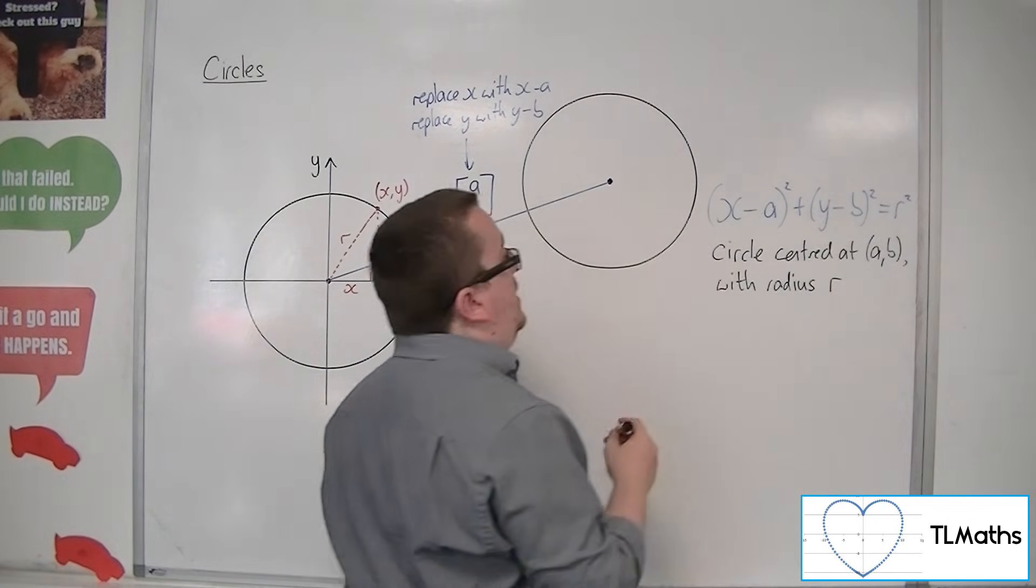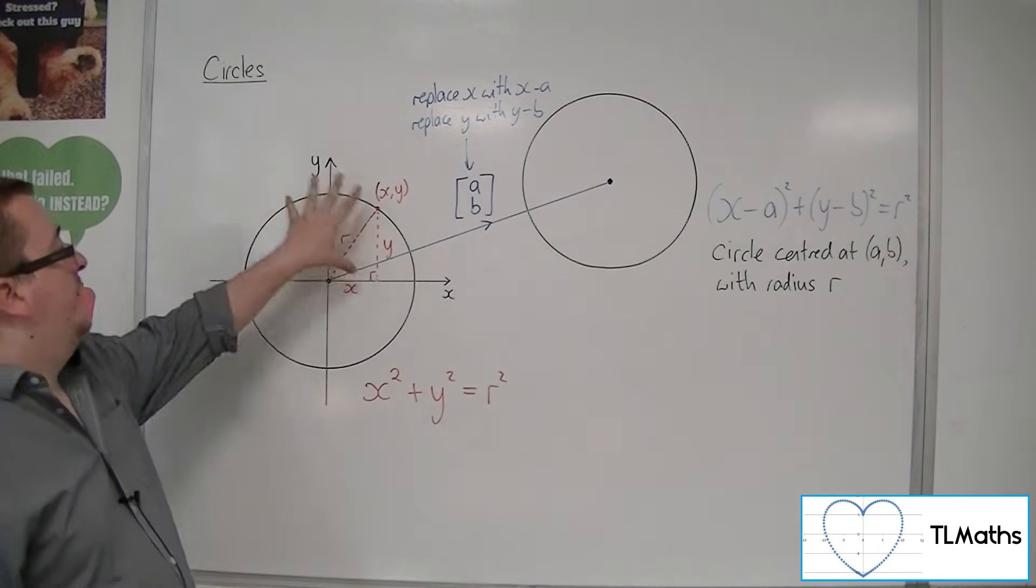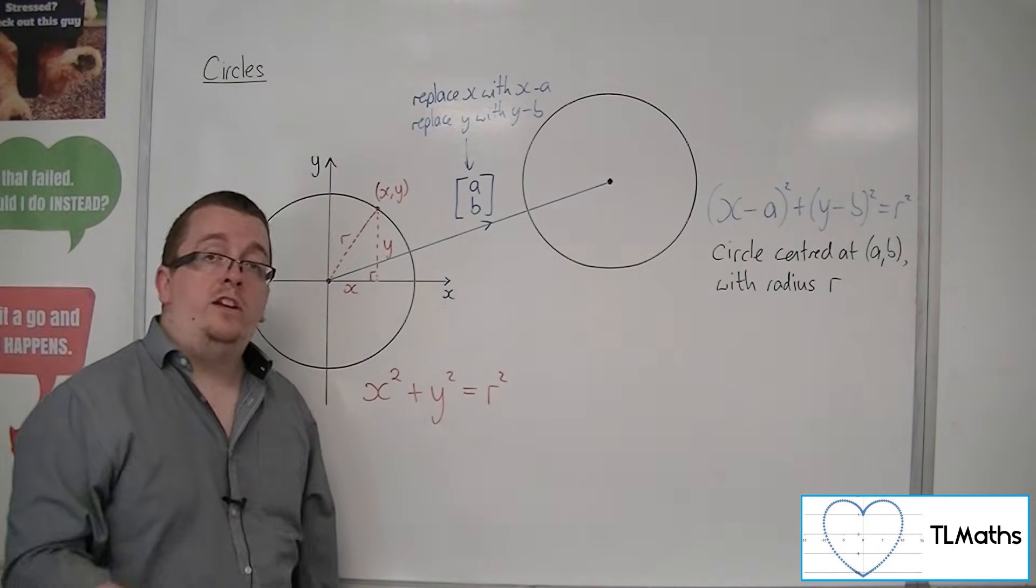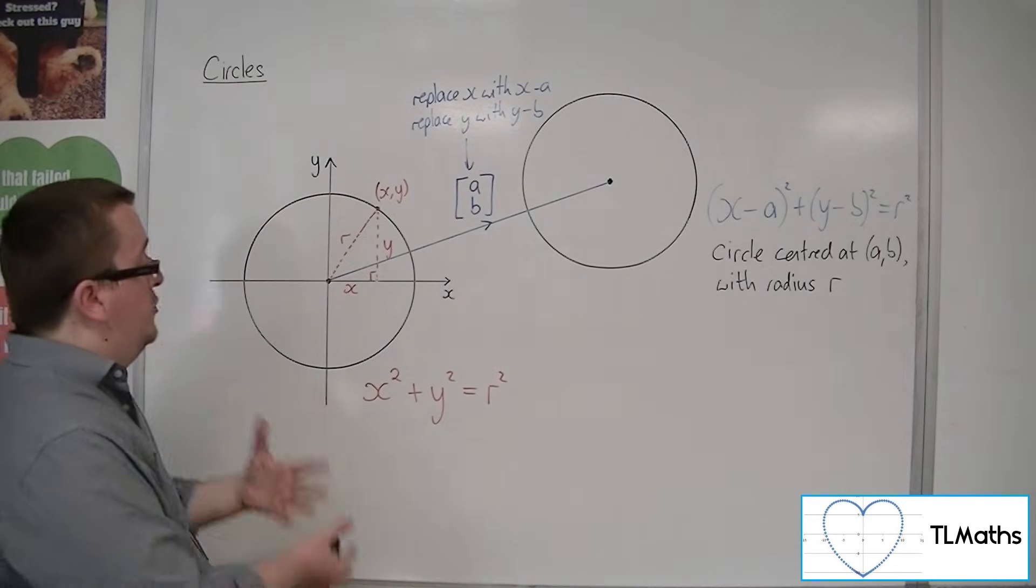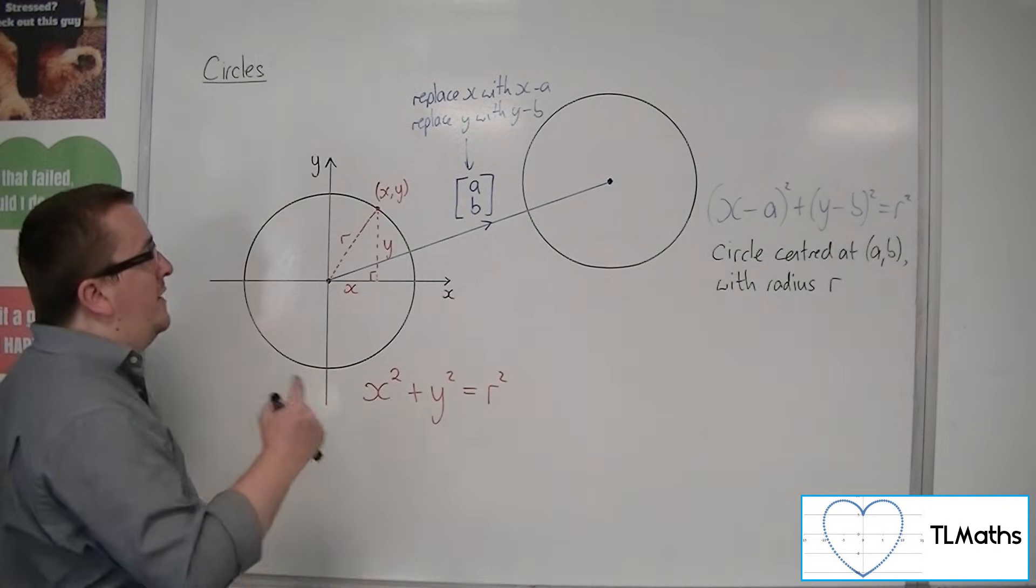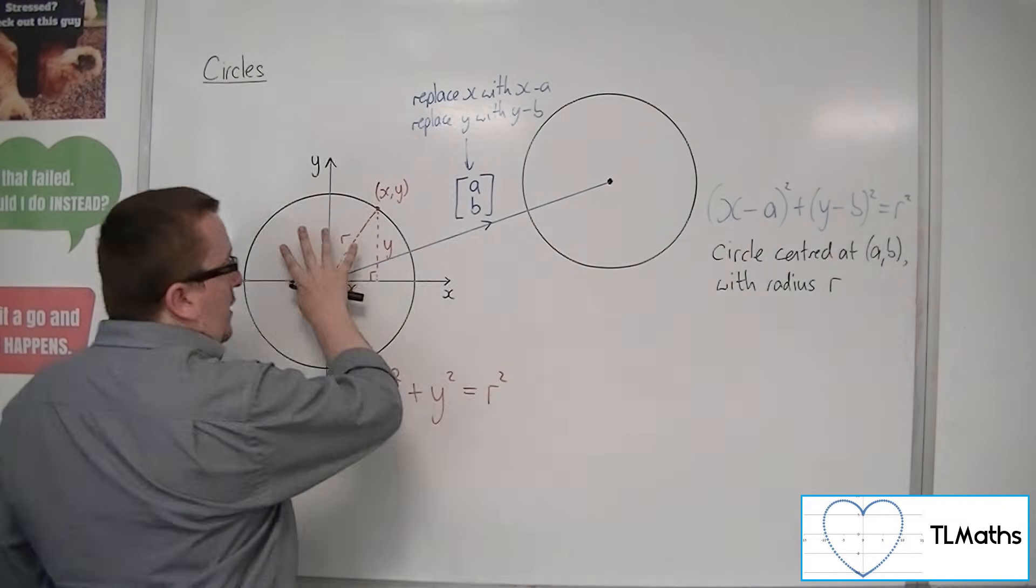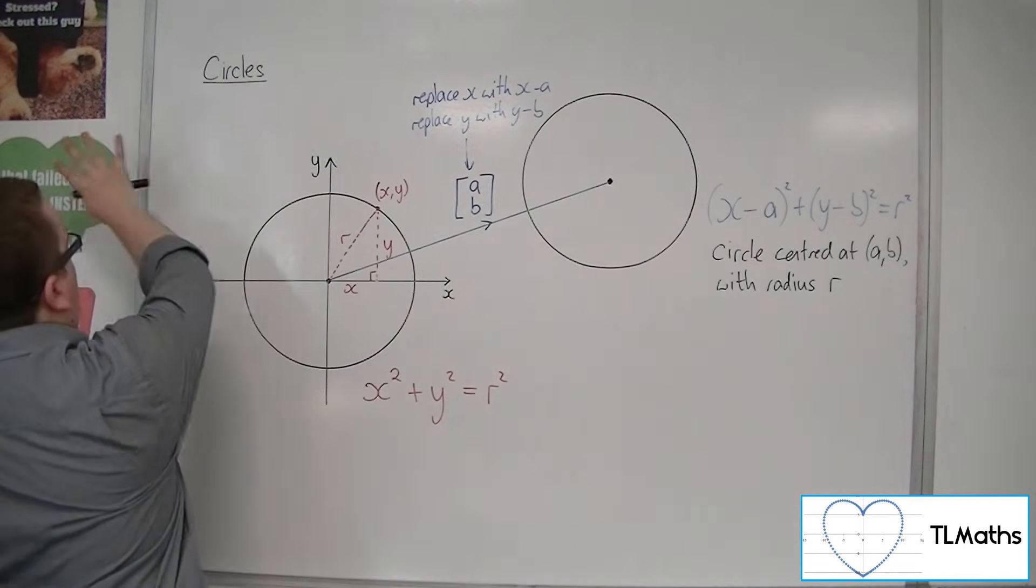So this is the equation. It comes from looking at the circle centered at the origin and using Pythagoras' theorem to write down what we know, and then performing a translation so that this vector could have been anything. It could have moved it down here or here or here, whatever.